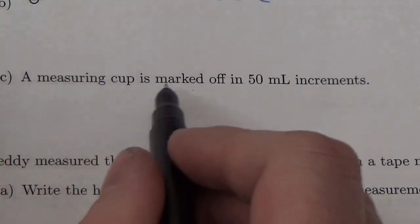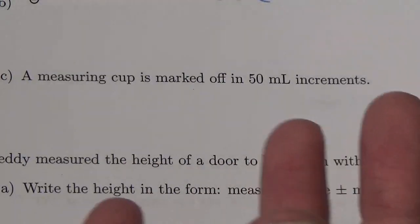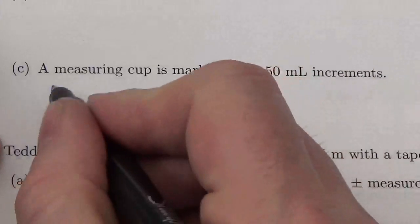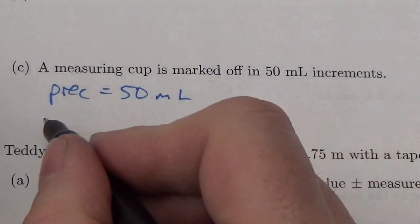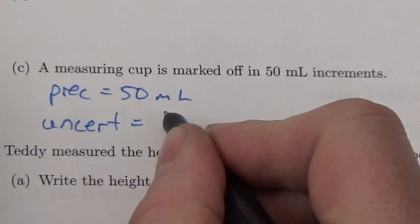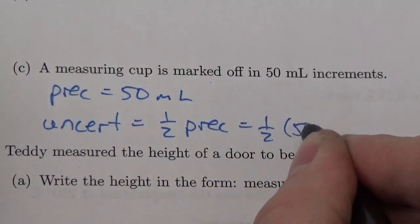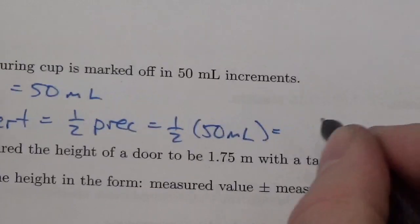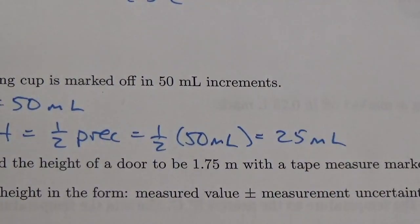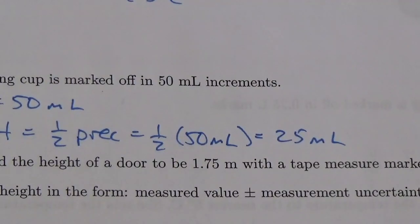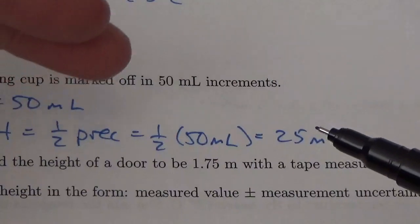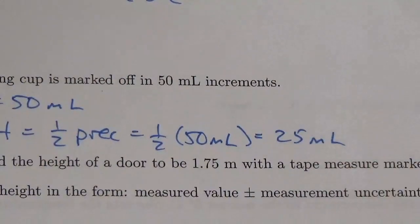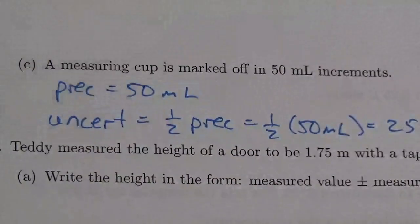A measuring cup is marked off in 50 milliliter increments. Assuming that's the smallest measurement, its precision is 50 milliliters. So the uncertainty is going to be half the precision — half of 50 milliliters, or 25 milliliters. Meaning when I throw fluid in there and measure the volume, if I say something is 100 milliliters, I could be as much as 25 below or 25 above that, based on the precision of this measurement.